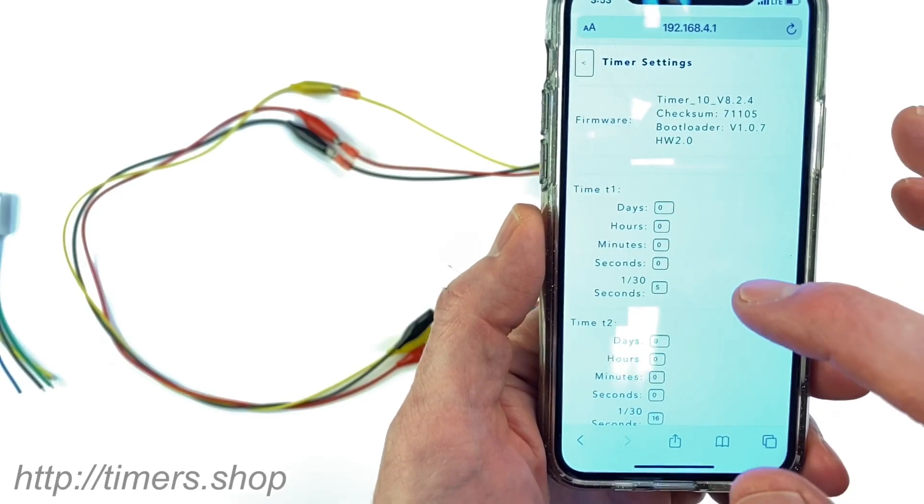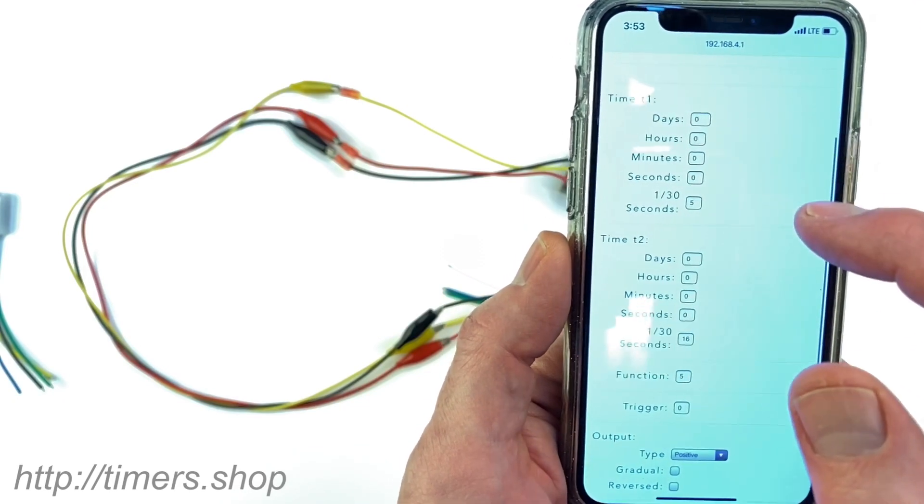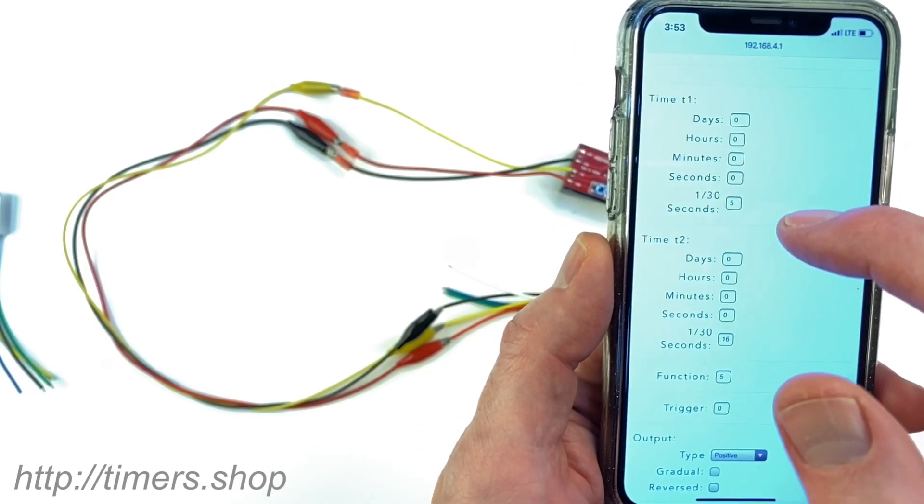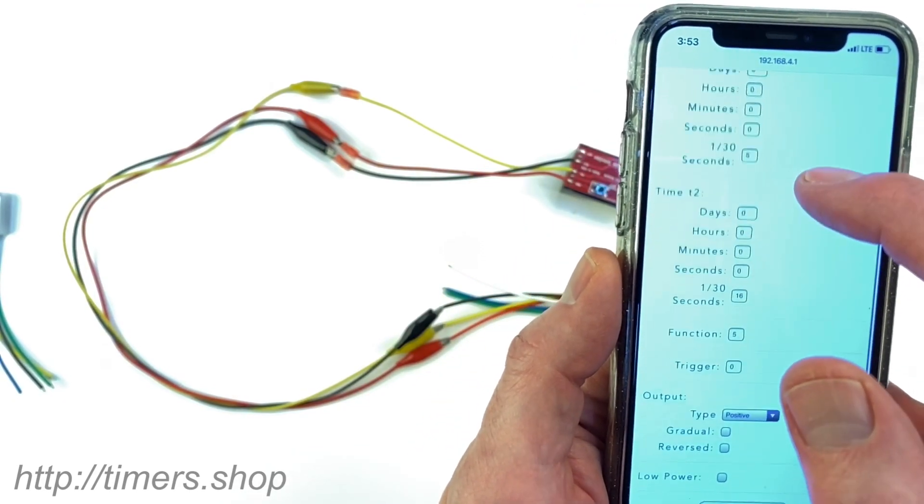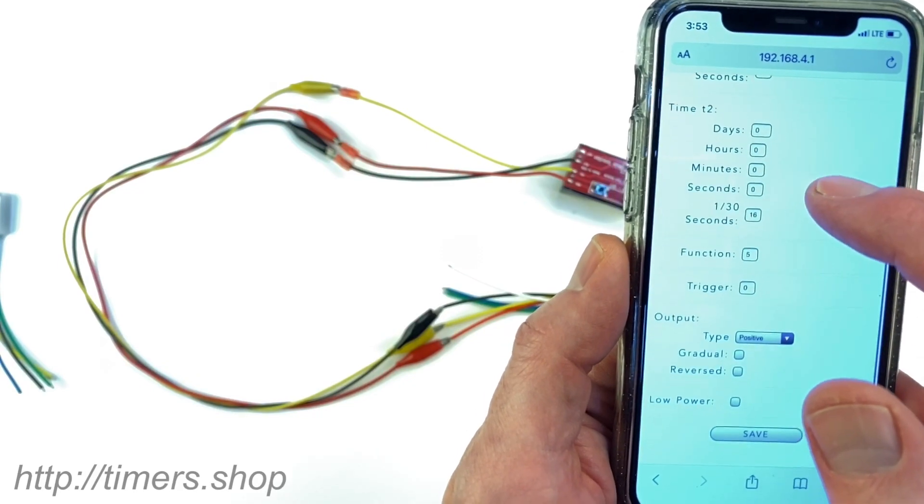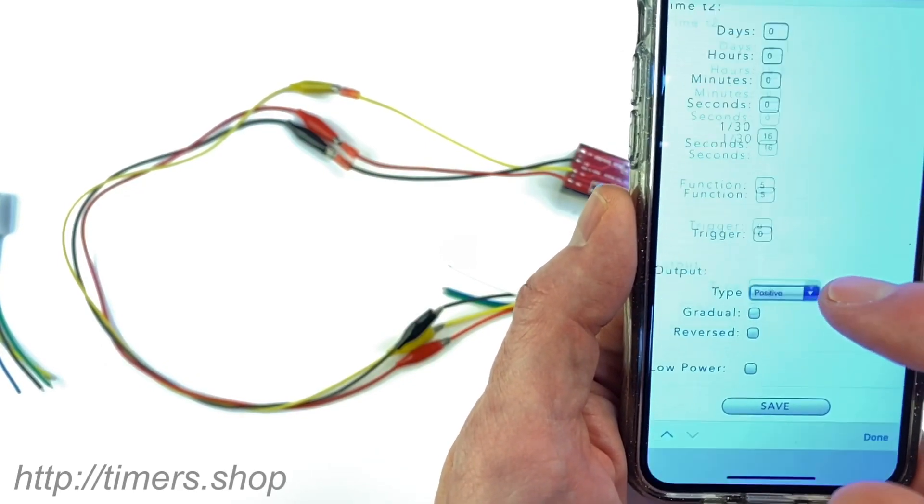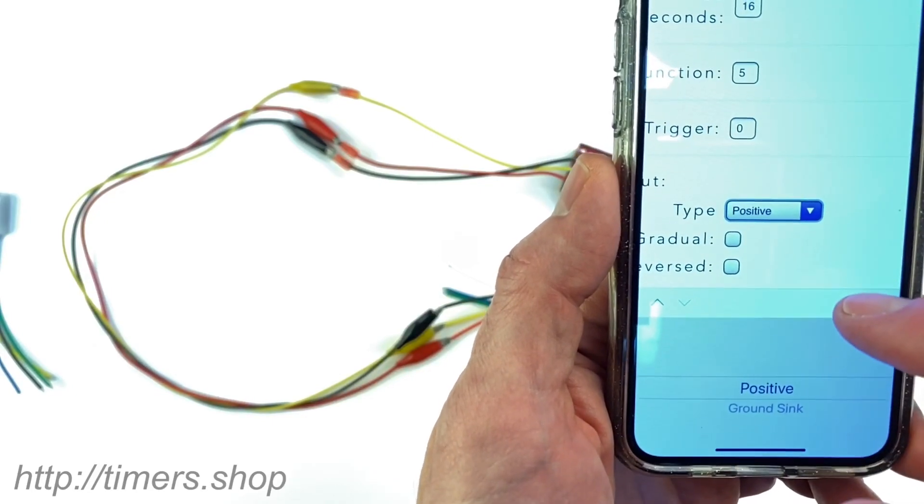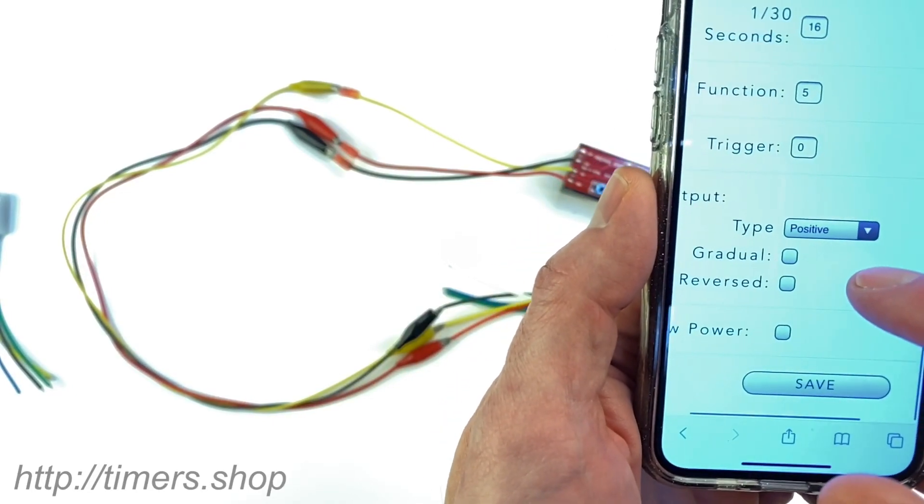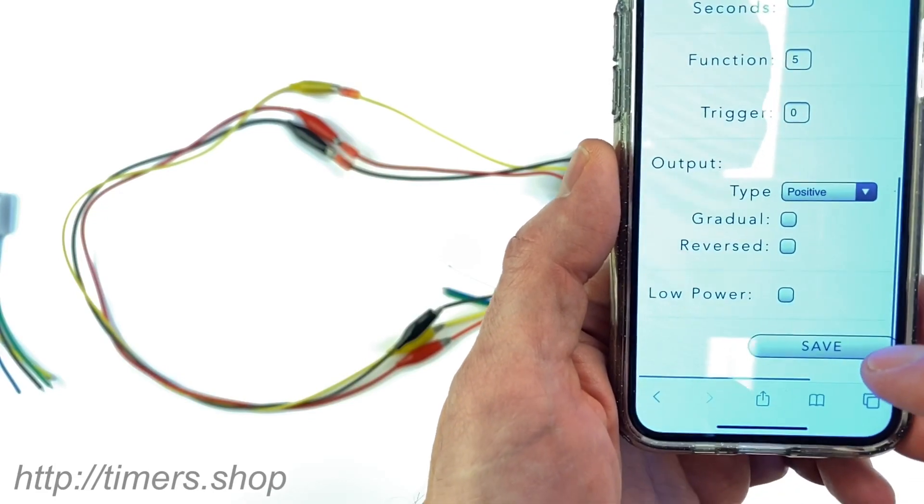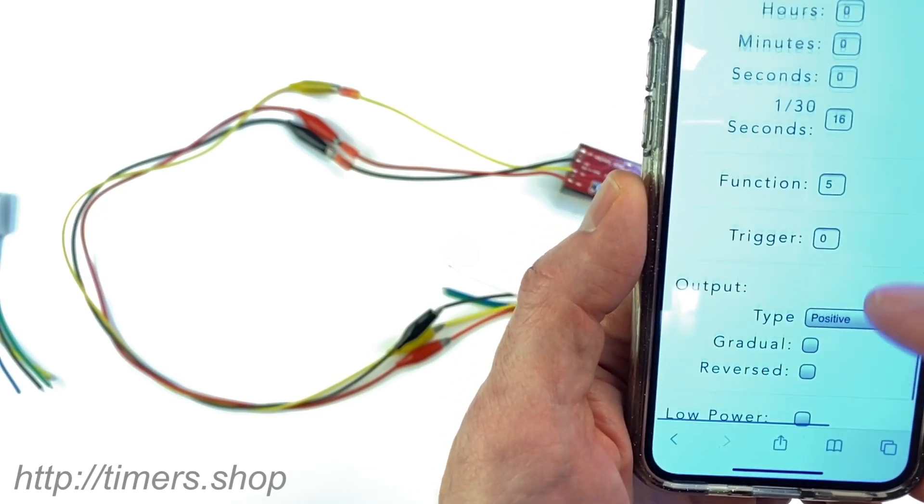This is where you can see all the timer's configuration. Here's your time T1. It's low power consumption and a save mode.